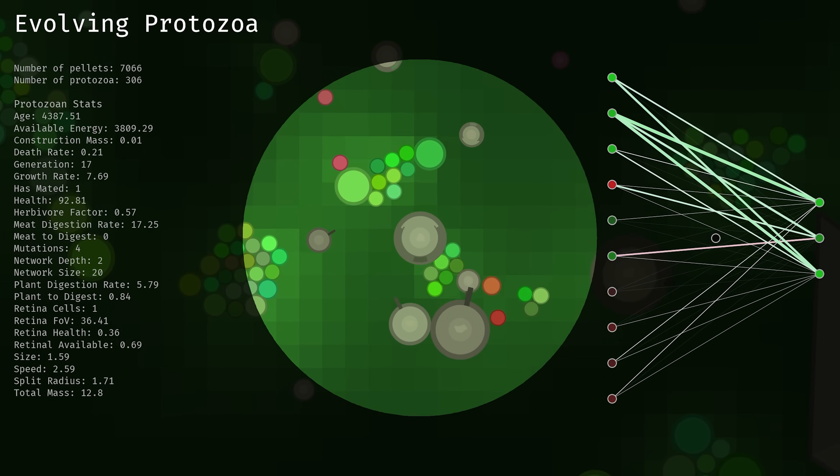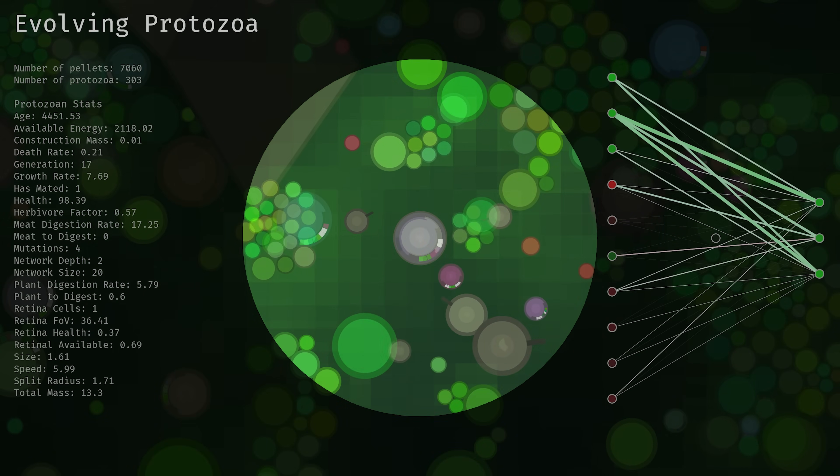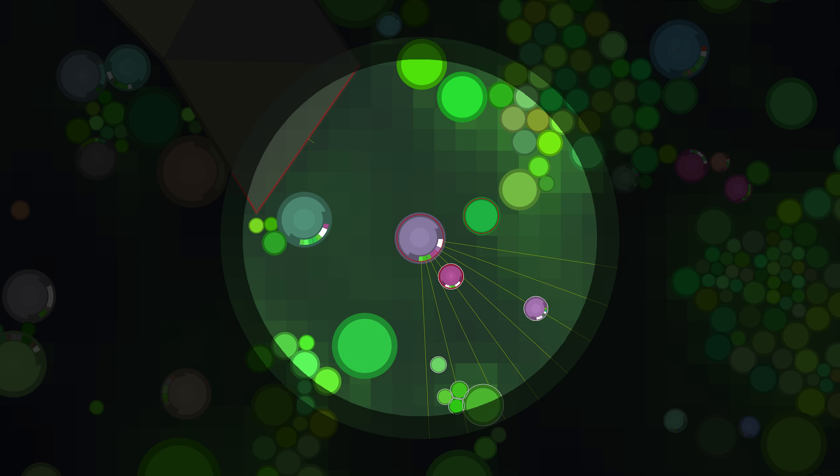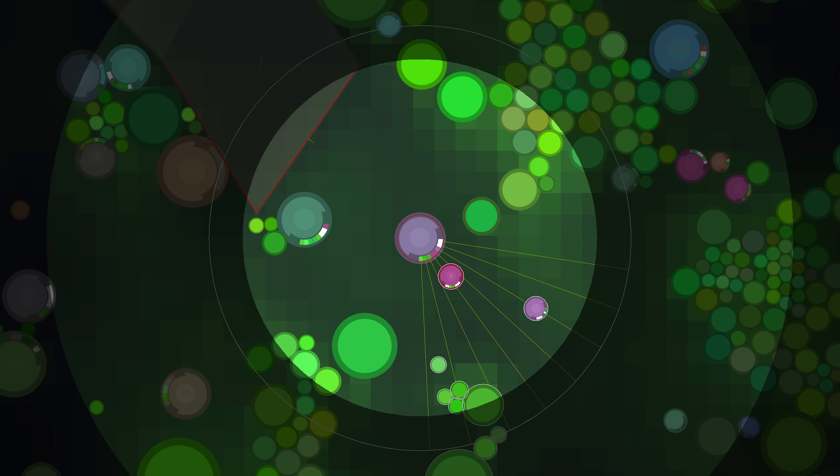Let us turn briefly to go into slightly more detail about how the retina mechanics are implemented. The image on screen shows a protozoa with a highly developed retina consisting of eight cells arranged across a 90-degree field of view. These cells work according to a raycasting algorithm used in many computer graphics systems.